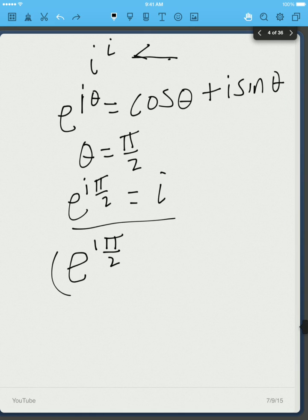But from exponential rules we know that this is equal to e to the i times i times pi over 2.